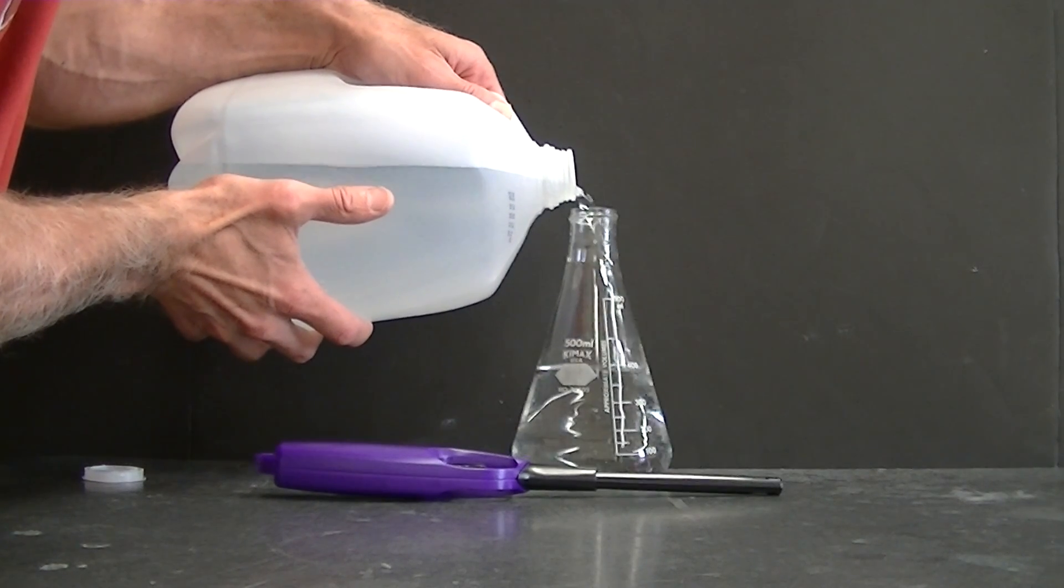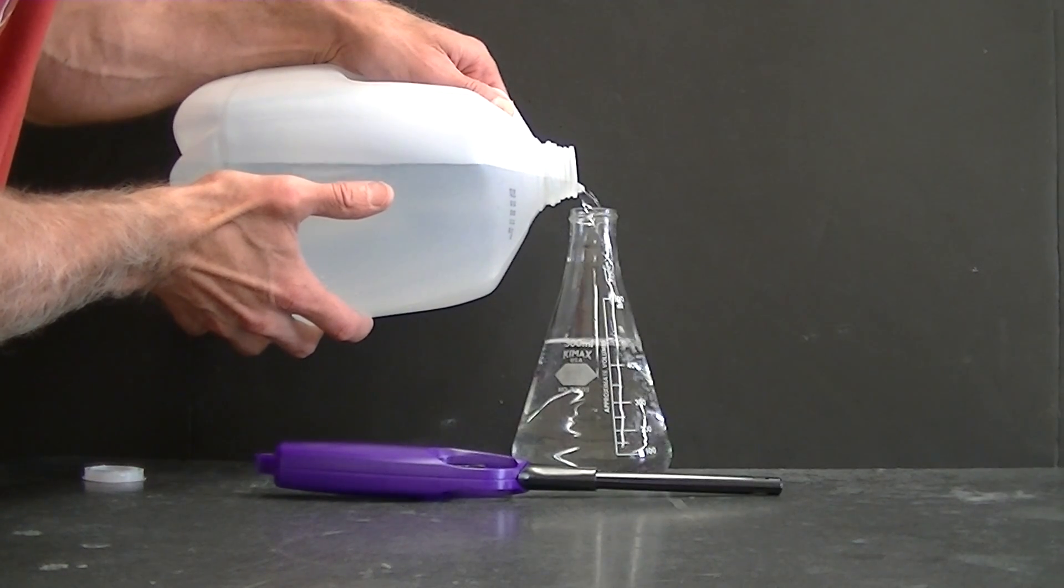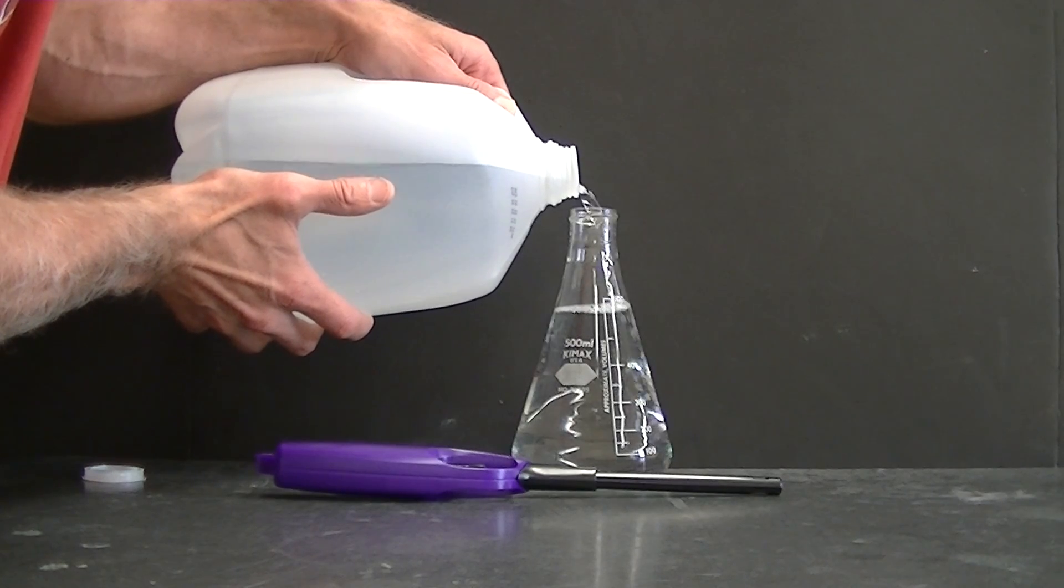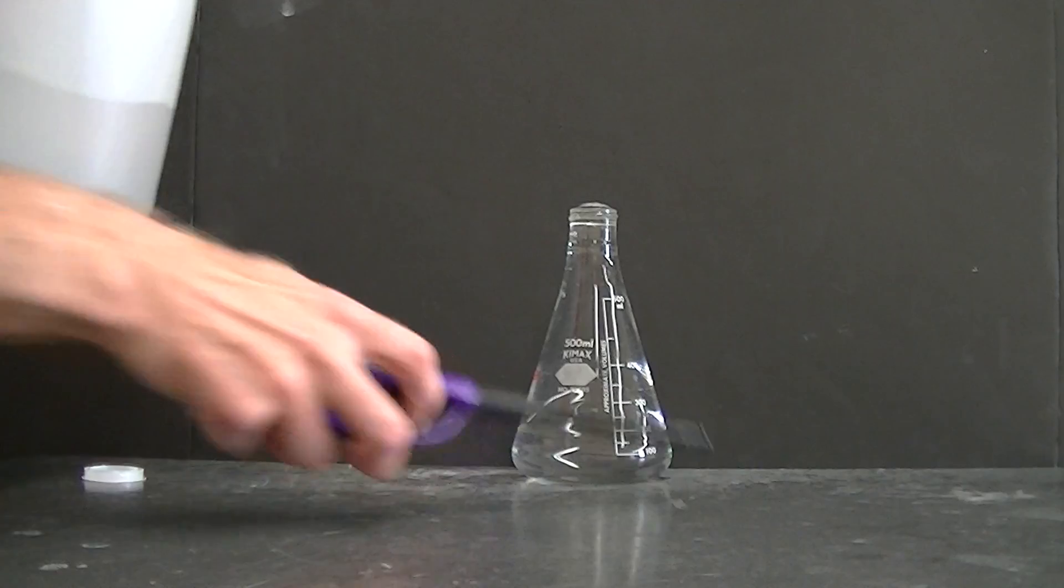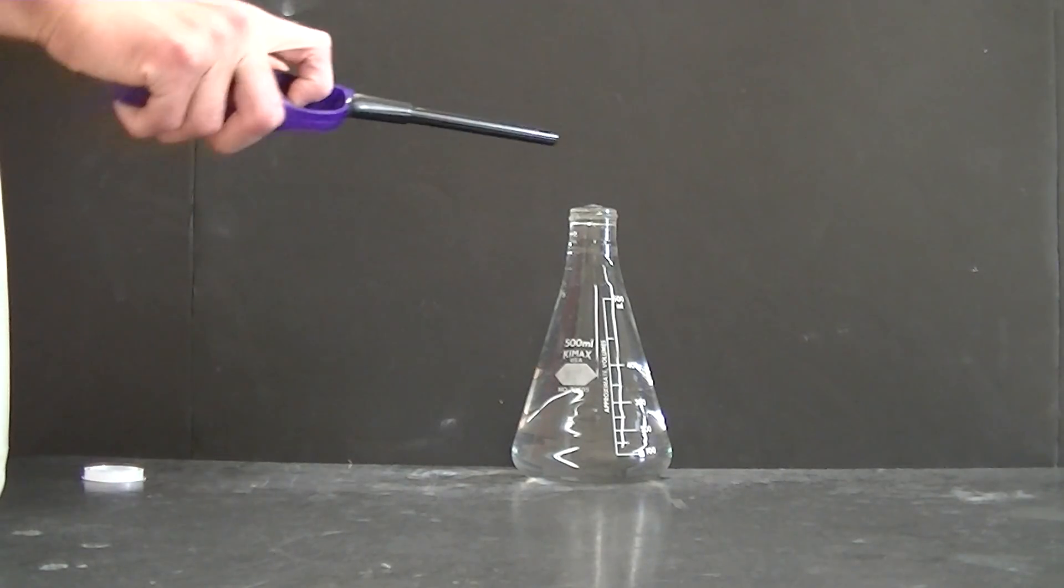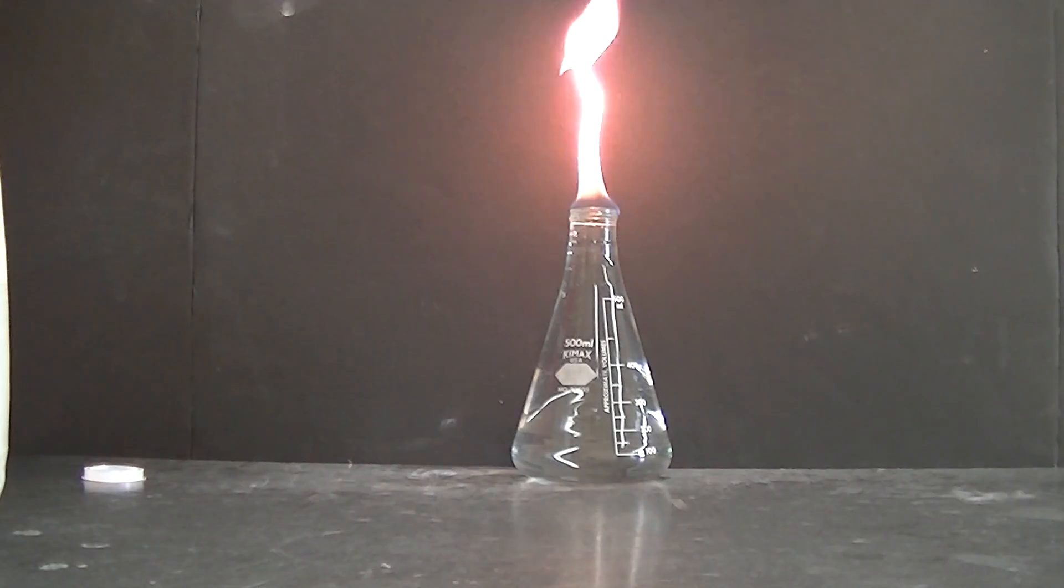The hexane layer floats on top of the water layer because it's less dense than water. You fill it all the way to the top, and because the hexane layer is on the top, it can be lit on fire.